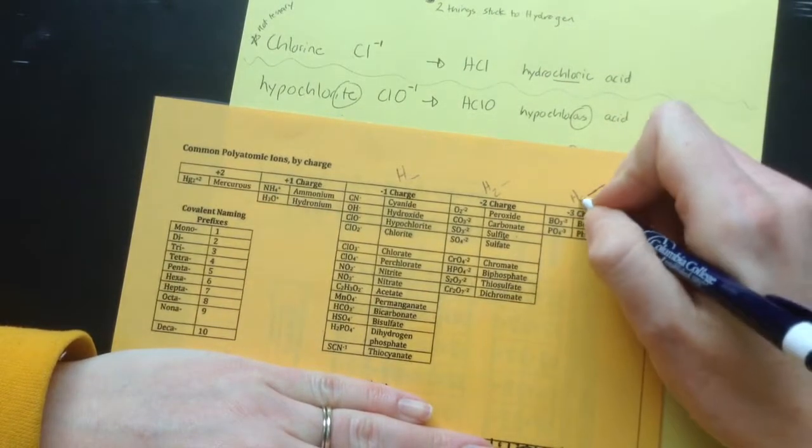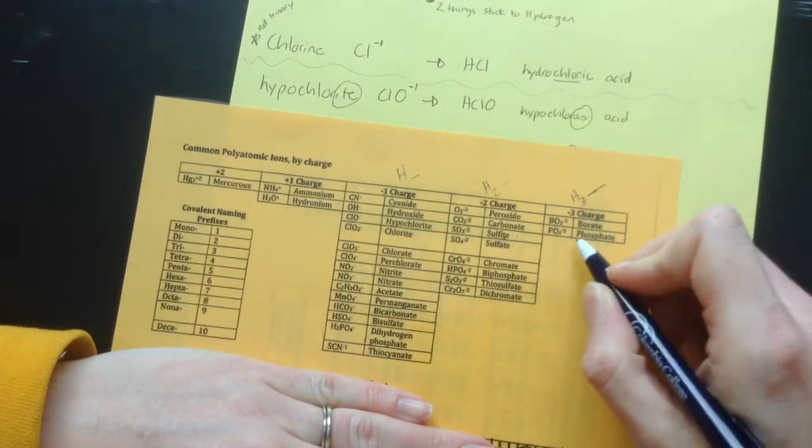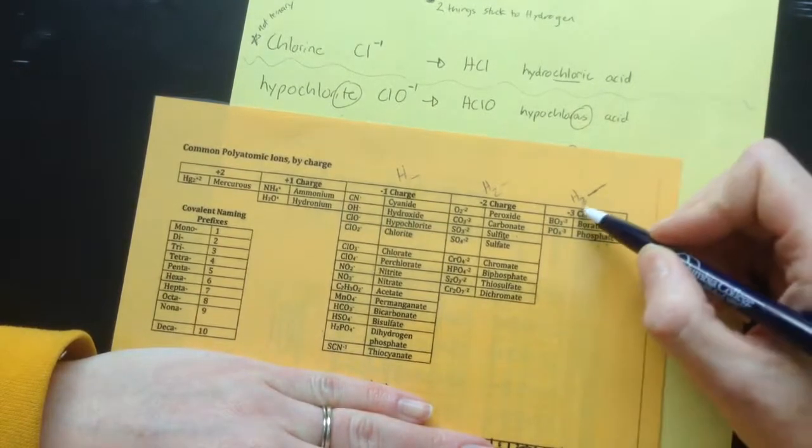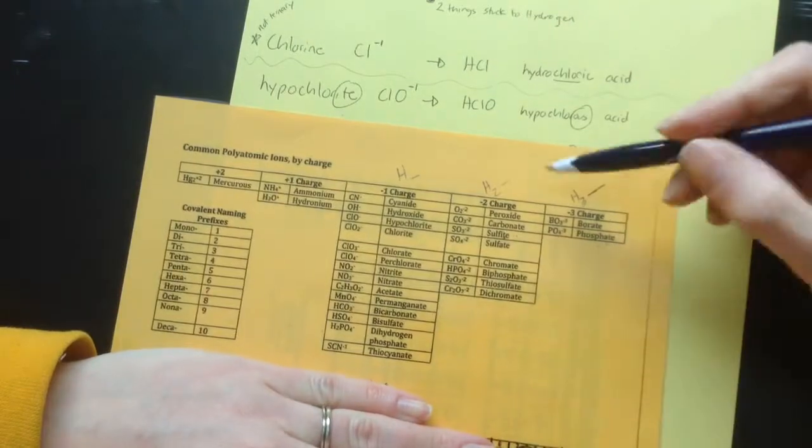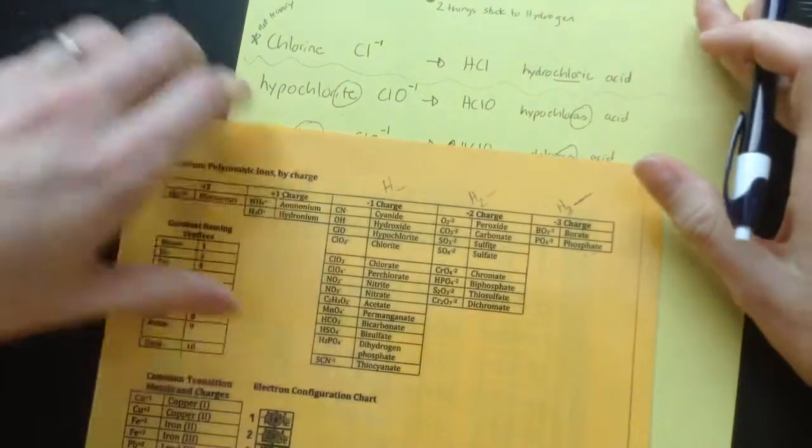So if you ever see phosph, that's a three, if you ever see phosphic acid, ate says ic, phosphic acid would be H3PO4. So we're looking at the different charges there to be able to write the formula. So that's it, though, for naming ternary acids.